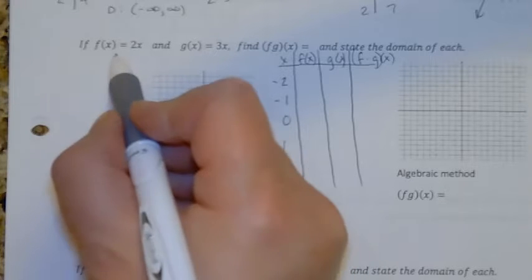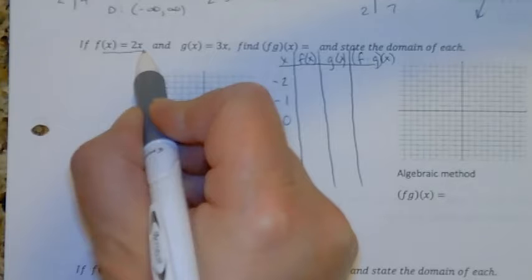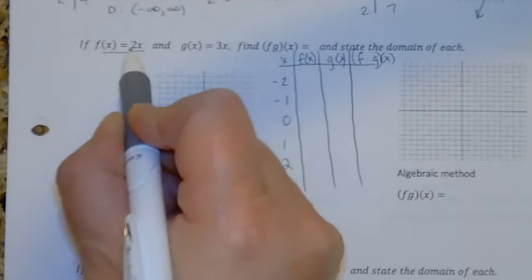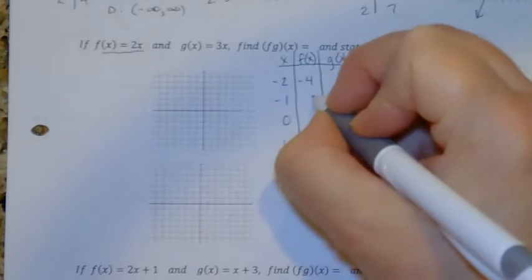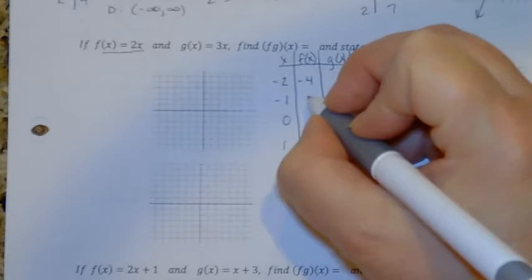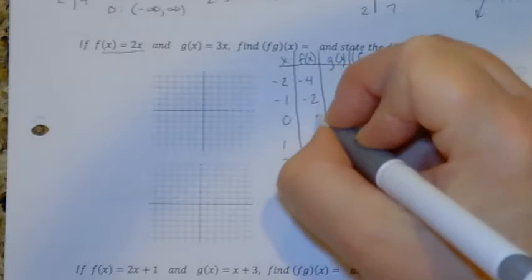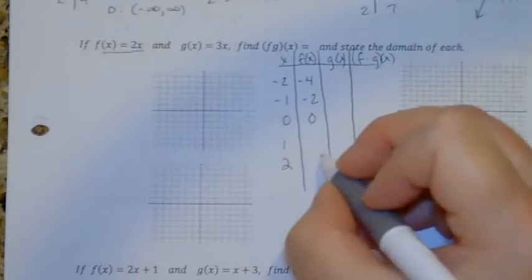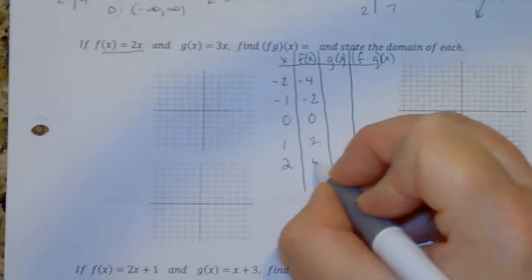So I'm going to start with f of x is 2x, and I'm going to put negative 2 in here. So 2 times negative 2 is negative 4, 2 times negative 1 is negative 2, 2 times 0 is 0, 2 times 1 is 2, and 2 times 2 is 4.